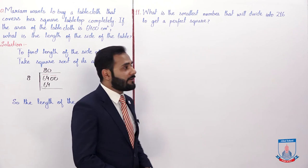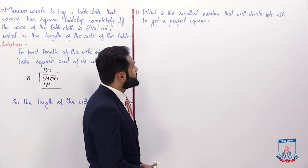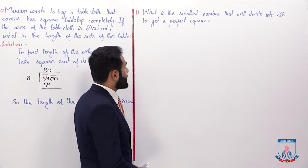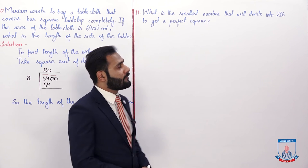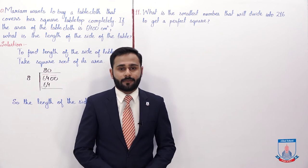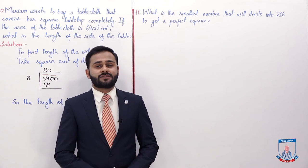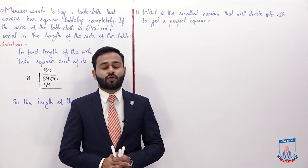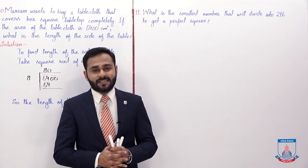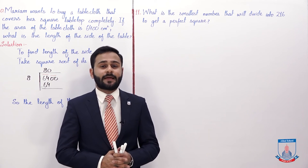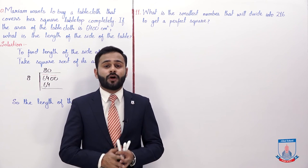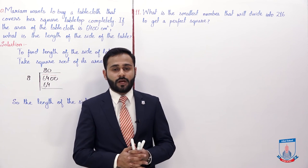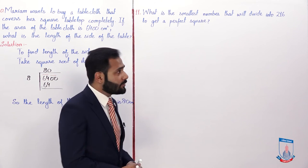Question number 11: what is the smallest number that will divide into 216 to get a perfect square? We need to find which smallest number, when dividing 216, gives a perfect square. Let's find it out.